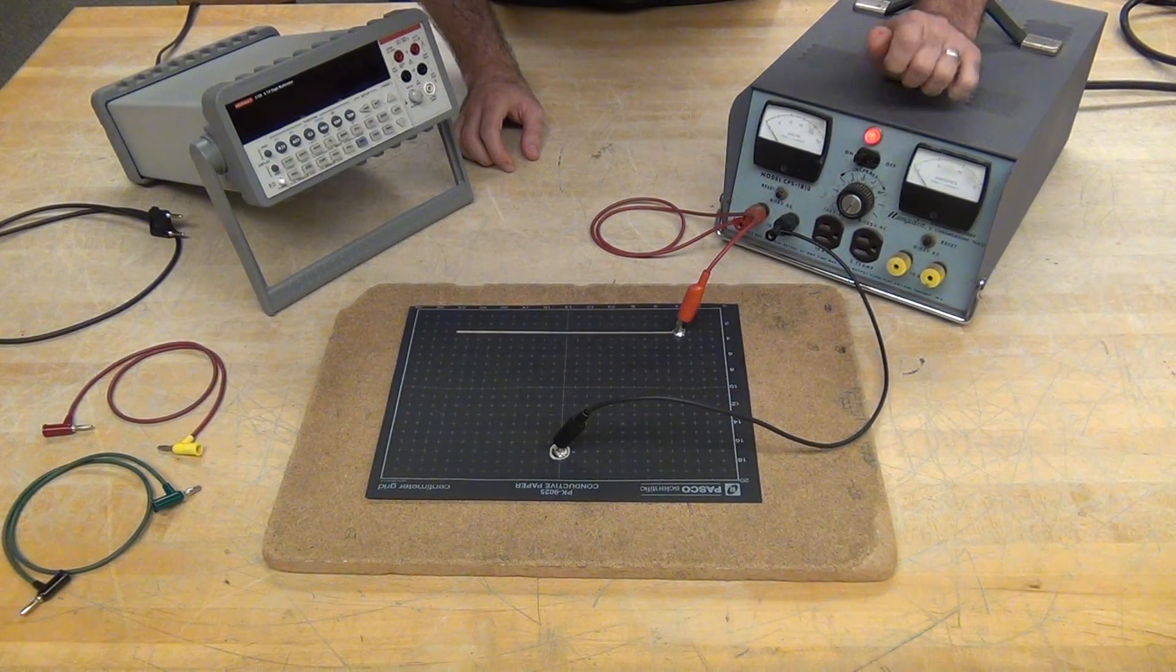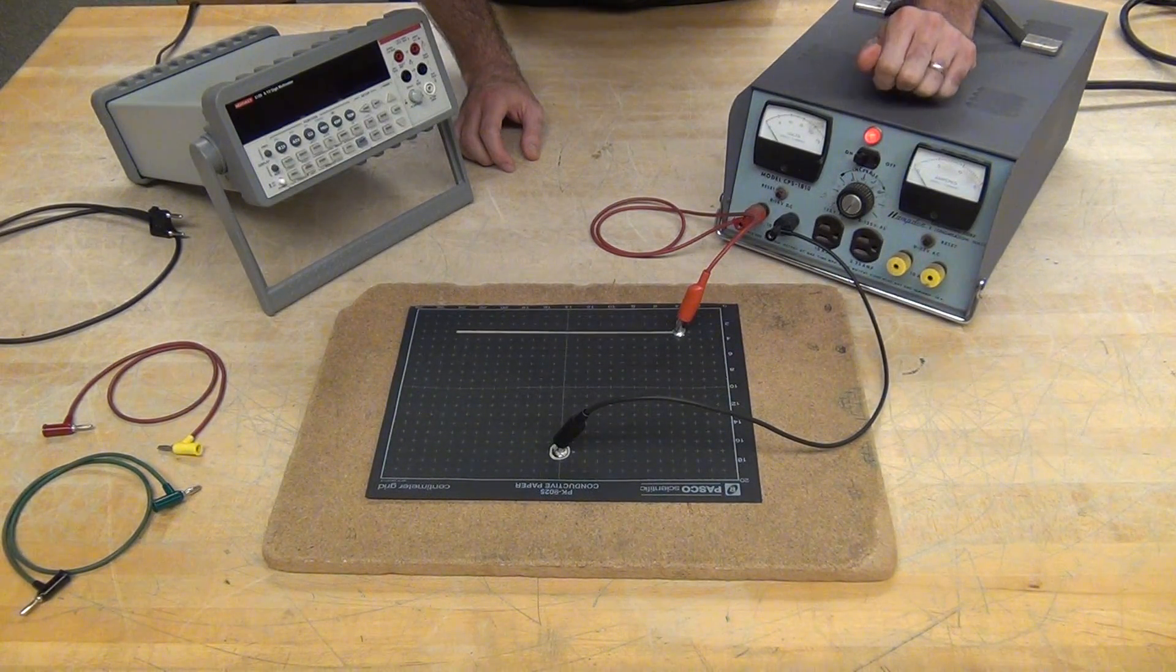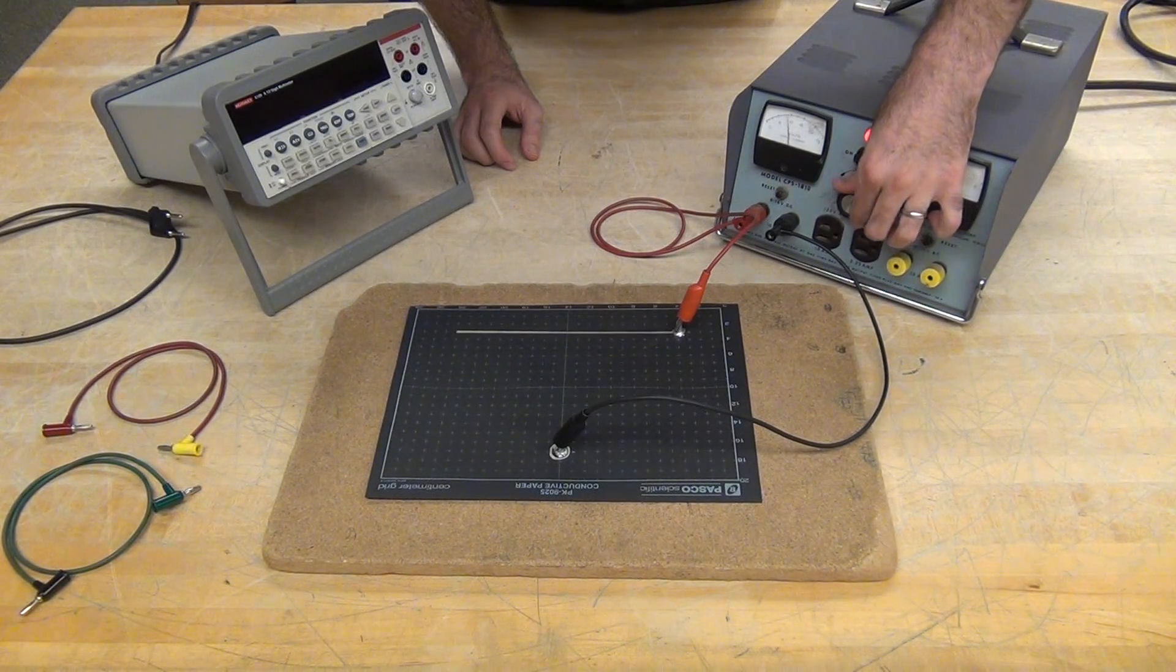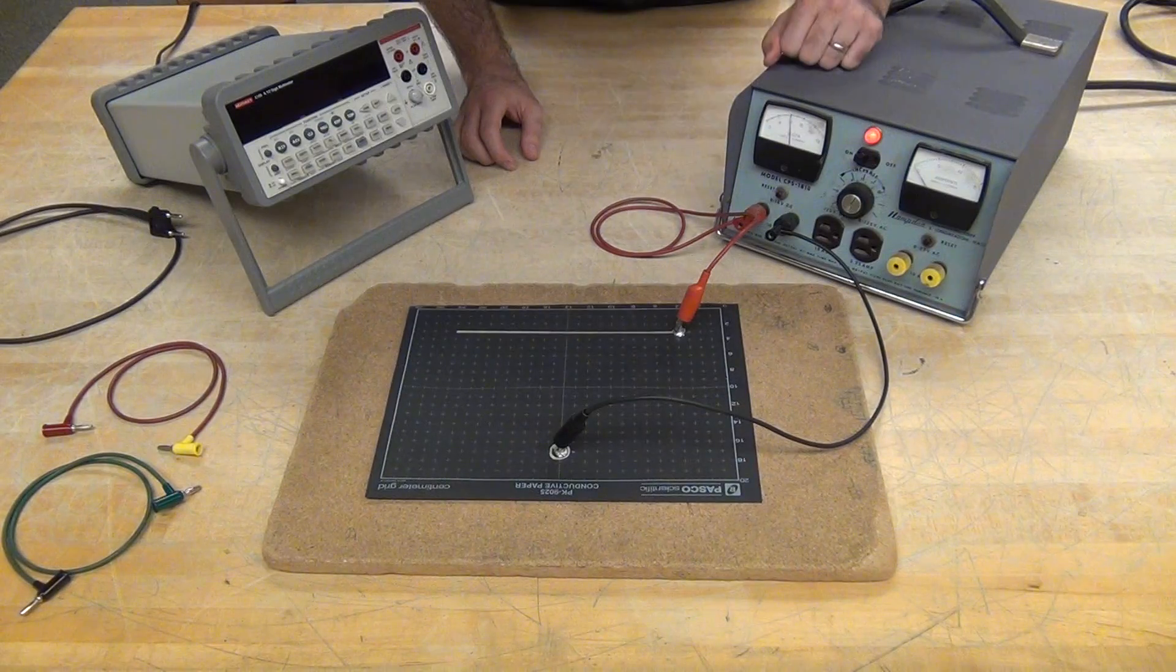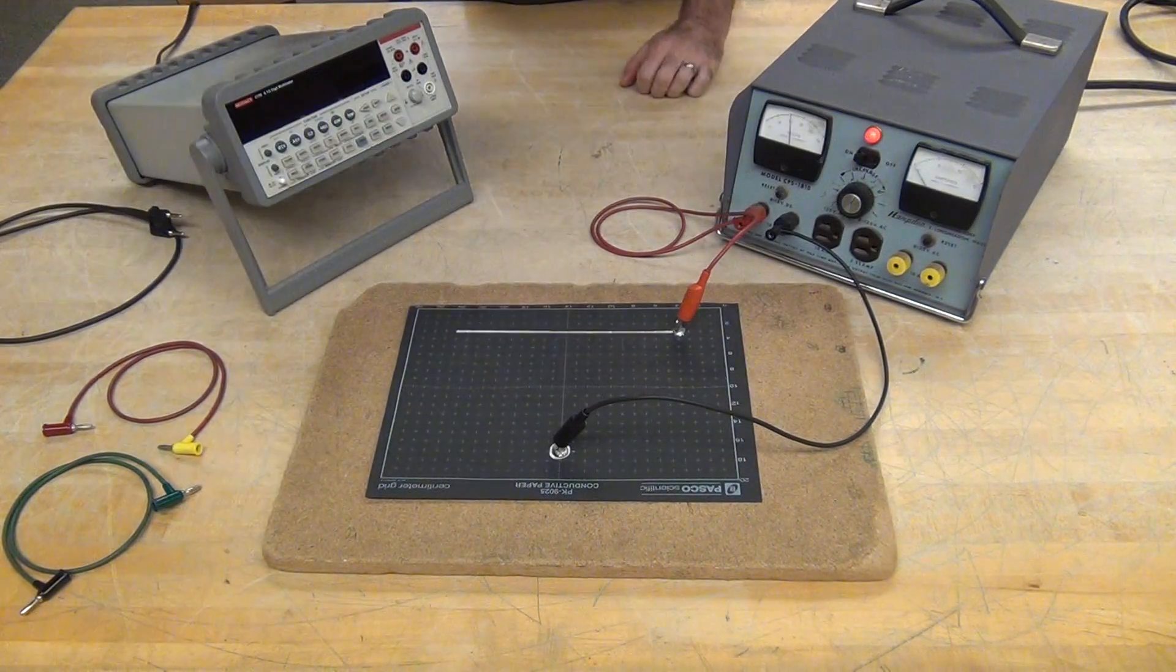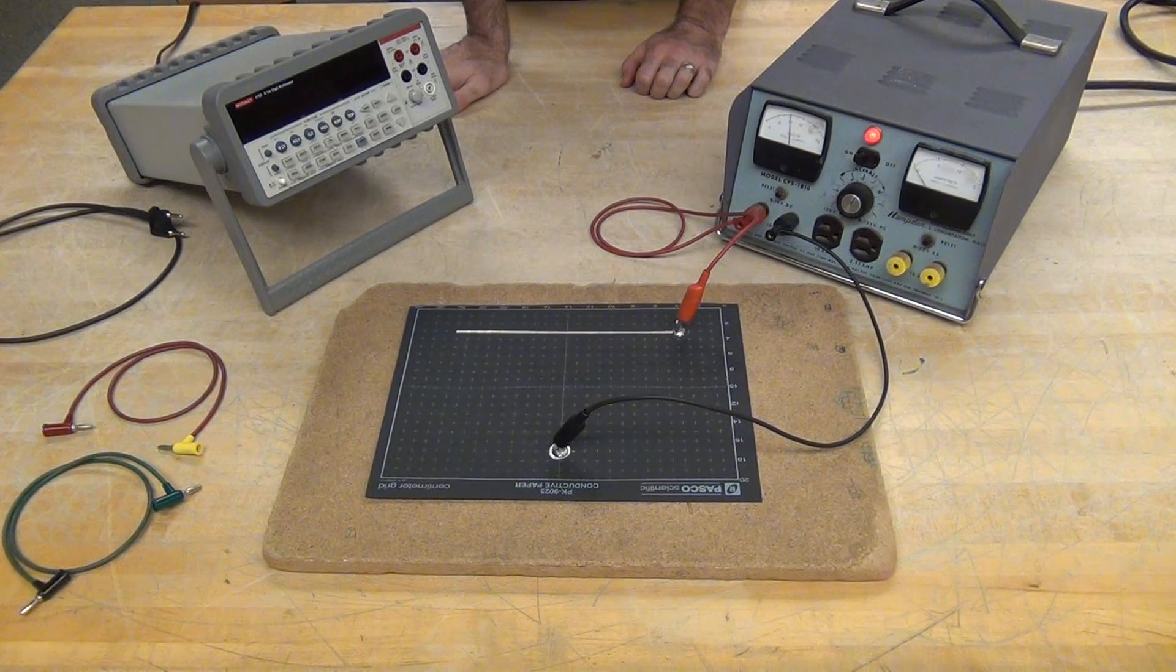I'll then turn on the Hamden and slowly dial it up to 10 volts and I'm on the DC side. So I've set the potential difference between those two places to 10 volts.